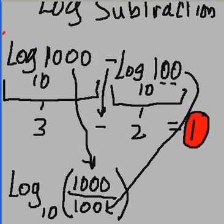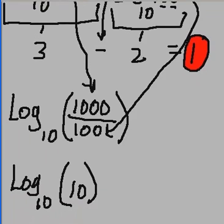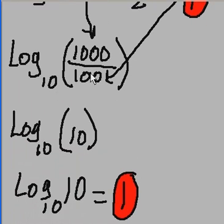So log base 10 of 1,000 minus log base 10 of 100 can be rewritten as log base 10 of 1,000 divided by 100, or log base 10 of 10. And 10 to what power equals 10? 1.